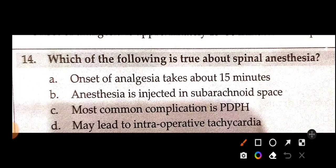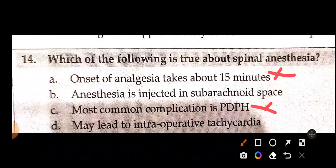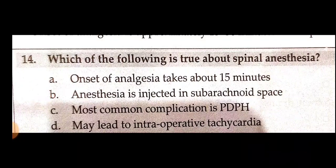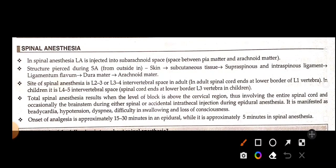Which of the following is true about spinal anesthesia? Options: onset takes about 15 minutes, anesthesia injected in subarachnoid space, most common complication is post-dural puncture headache, or may lead to intraoperative tachycardia. The correct answer is that anesthesia is injected in the subarachnoid space — between pia and arachnoid mater. The onset of analgesia is approximately 5 minutes in spinal anesthesia.